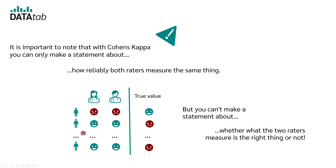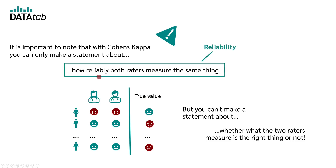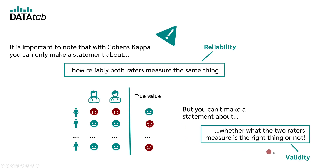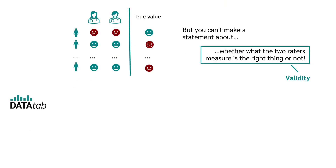If both raters almost always measure the same thing, your Cohen's kappa would be very high. Cohen's kappa does not tell you whether the measured value matches reality — for example, whether the right thing is being measured. In the first case, one speaks of reliability, and in the second case, one speaks of validity.